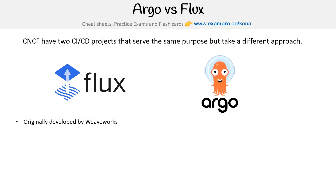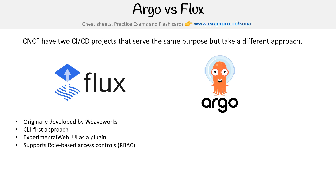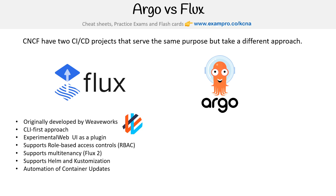Flux was originally developed by Weaveworks. It takes a CLI-first approach. Its experimental web UI is a plugin, so you can get a visual interface. It supports role-based access controls and multi-tenancy in Flux 2 — if you're using Flux 1, you won't have that. It supports Helm and Kustomization, and it has automation of container updates.